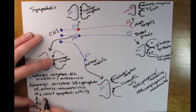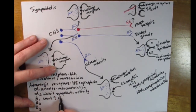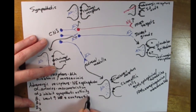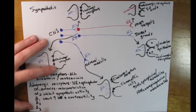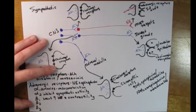Probably the best known adrenergic receptor is the beta-1 receptor. Beta-1 receptors are found on the heart. These increase heart rate and increase contractility of the muscles of the heart. There is a class of drugs called beta blockers that specifically inhibit the beta-1 adrenergic receptors. These drugs would be helpful if you didn't want a very high heart rate, and any cardiac patient is likely to be prescribed beta blockers as part of their drug regimen.